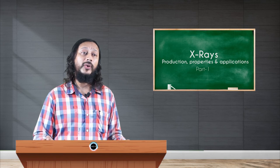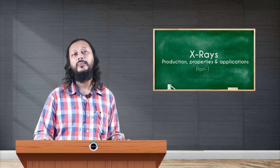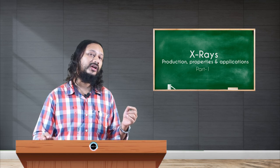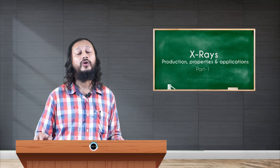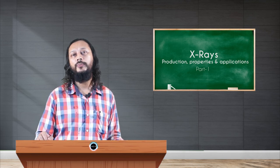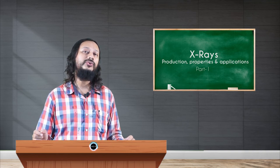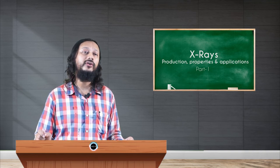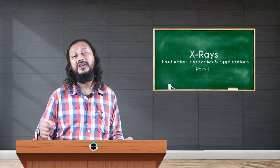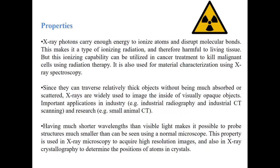Having a much shorter wavelength than visible light makes it possible to probe structures too small to be observed in a normal microscope. This property is used in X-ray microscopy, which acquires high-resolution images of objects that cannot be seen through visible light. X-ray crystallography is also used to determine the position of atoms in crystals, defects, and so on. We will come to the applications eventually.